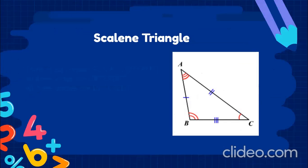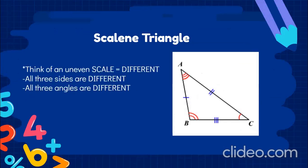Last we have the scalene triangle. Think of an uneven scale. Because the scale is uneven, that means there are different weights on each side — so all three sides are different and all three angles are different.